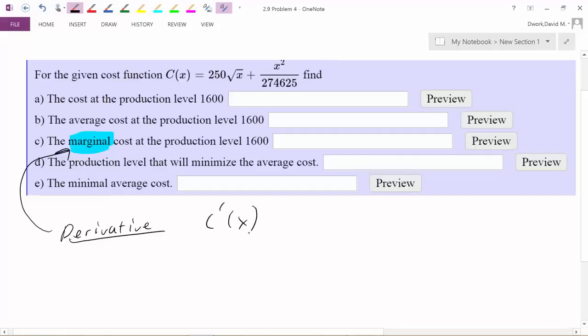So we just need to find C prime, find your cost. So, the marginal cost at a production level of $1600. So first you find your marginal cost, then if they want to know what it is at $1600, we're going to go ahead and substitute in $1600. So you got to find your derivative, then substitute in.